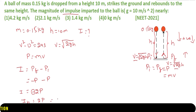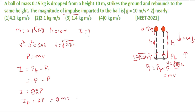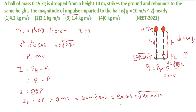The magnitude of impulse acting on the ball by the ground is 2P = 2mv = 2 × m × √(2gH). Substituting: 2 × 0.15 × √(2 × 10 × 10) = 2 × 0.15 × √200. That equals 20 × 0.15 × √2 = 3√2, which is approximately 4.2.